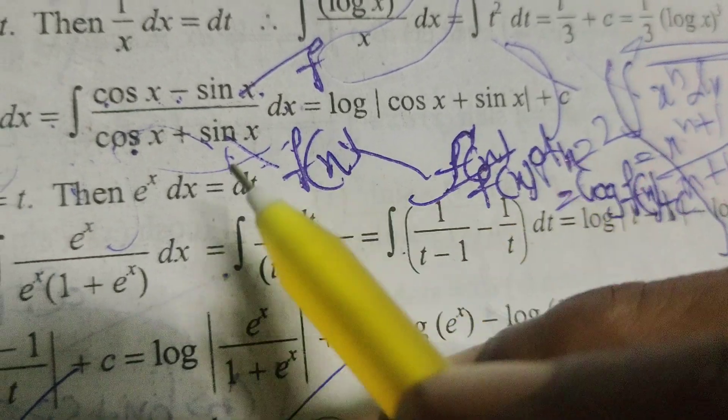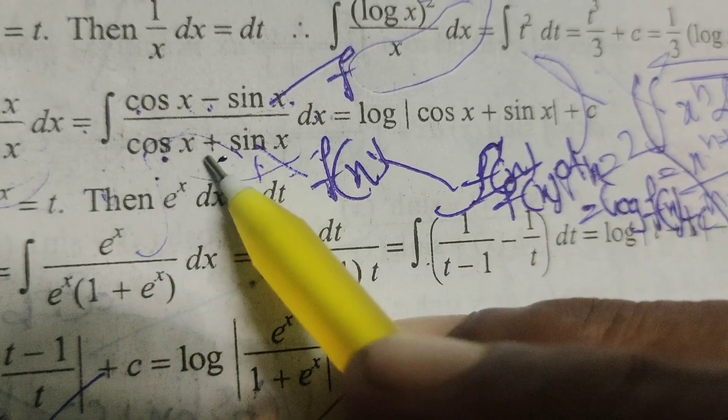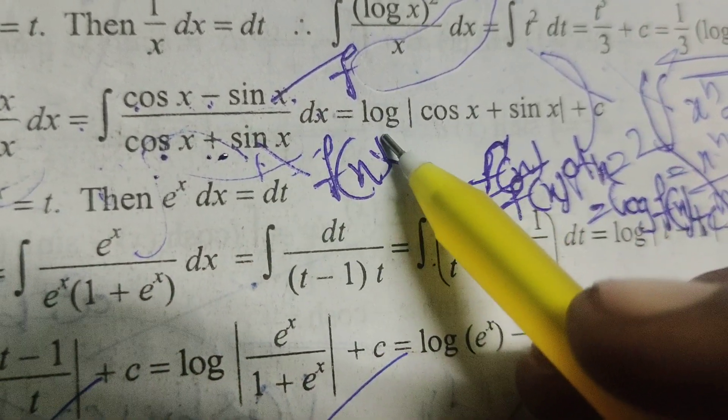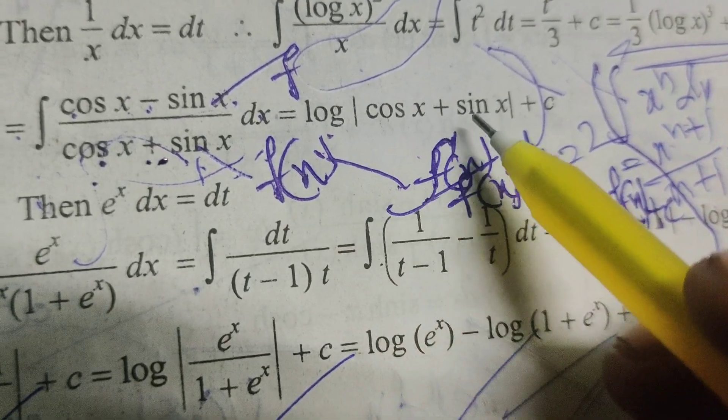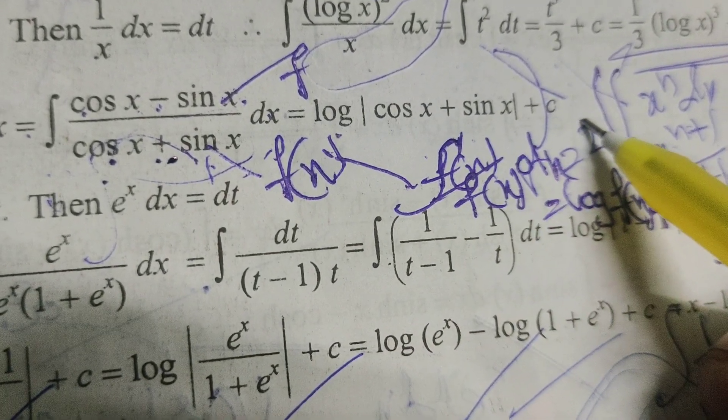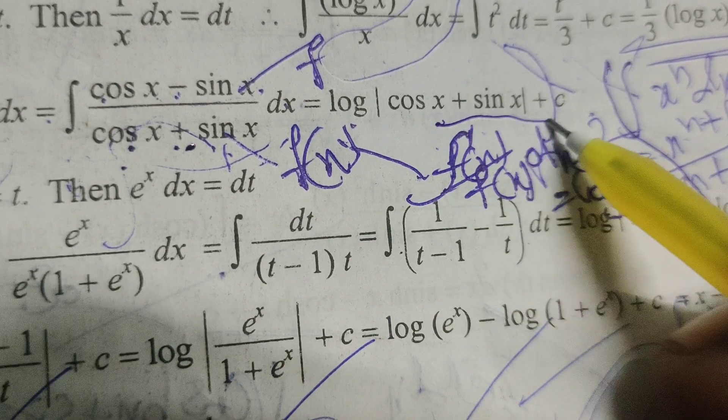Now here what is f of x? Cos x plus sin x. Therefore log of module cos x plus sin x. After integration adding the constant, plus c.